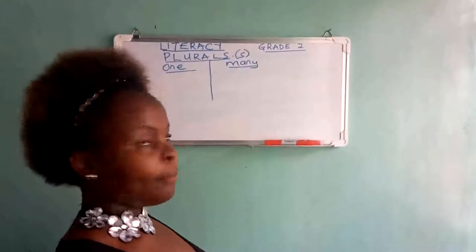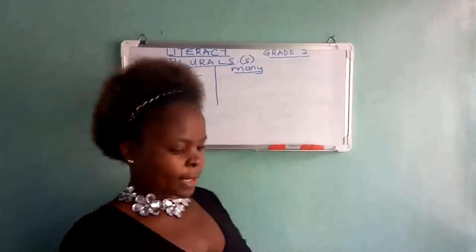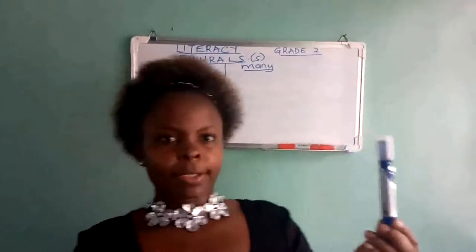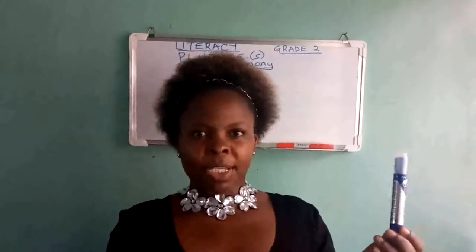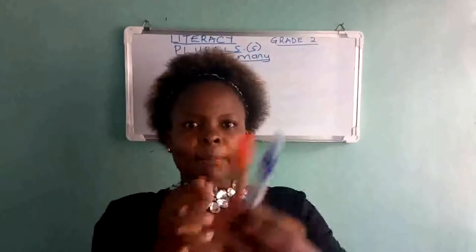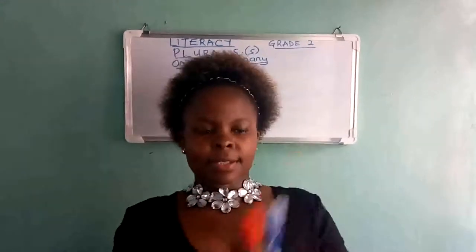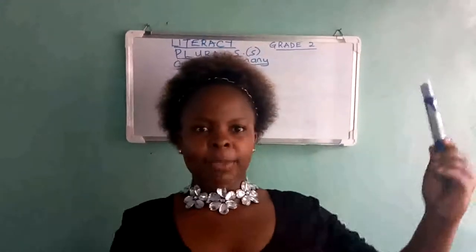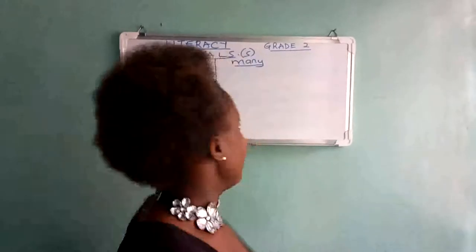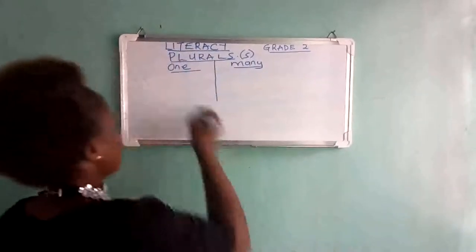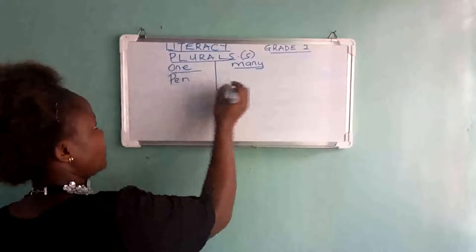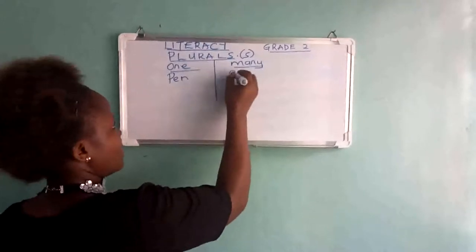Like an example: this is my pen. When there are many — when I have two of them — I'll say pens. This is one pen. These are two pens. We have one example there: pen, pens.